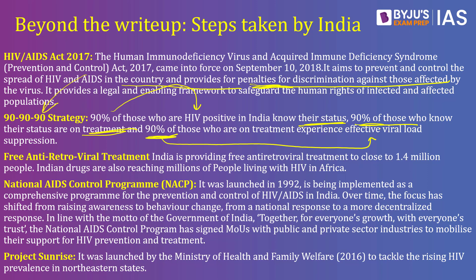We also have the National AIDS Control Programme since 1992 to prevent and control HIV/AIDS in India. The tagline of this programme is 'together for everyone's growth with everyone's trust.' We also started Project Sunrise in 2016 to tackle the rising HIV cases specifically in the northeastern states of India. These are some of the initiatives taken by the government to ensure HIV prevalence can be curtailed in the country.